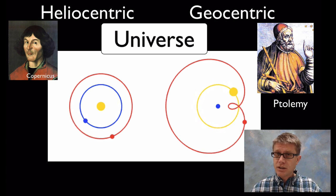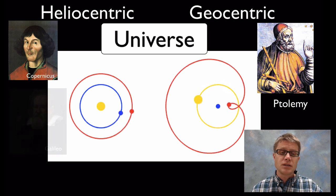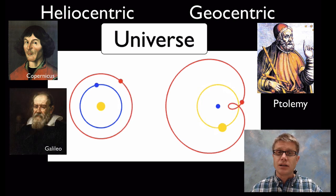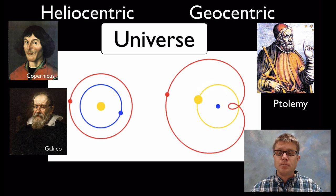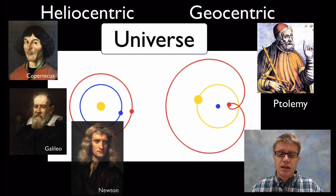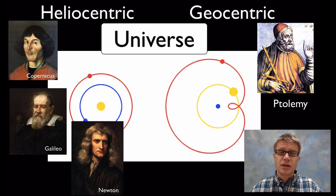He really started the ball rolling, but it wasn't until we gathered more data. Galileo used his telescope to, for example, study Venus and look at the phases of Venus to figure out that maybe the heliocentric model was correct. Then it was finished up by Isaac Newton who explained why the heliocentric model was right and the geocentric wasn't.